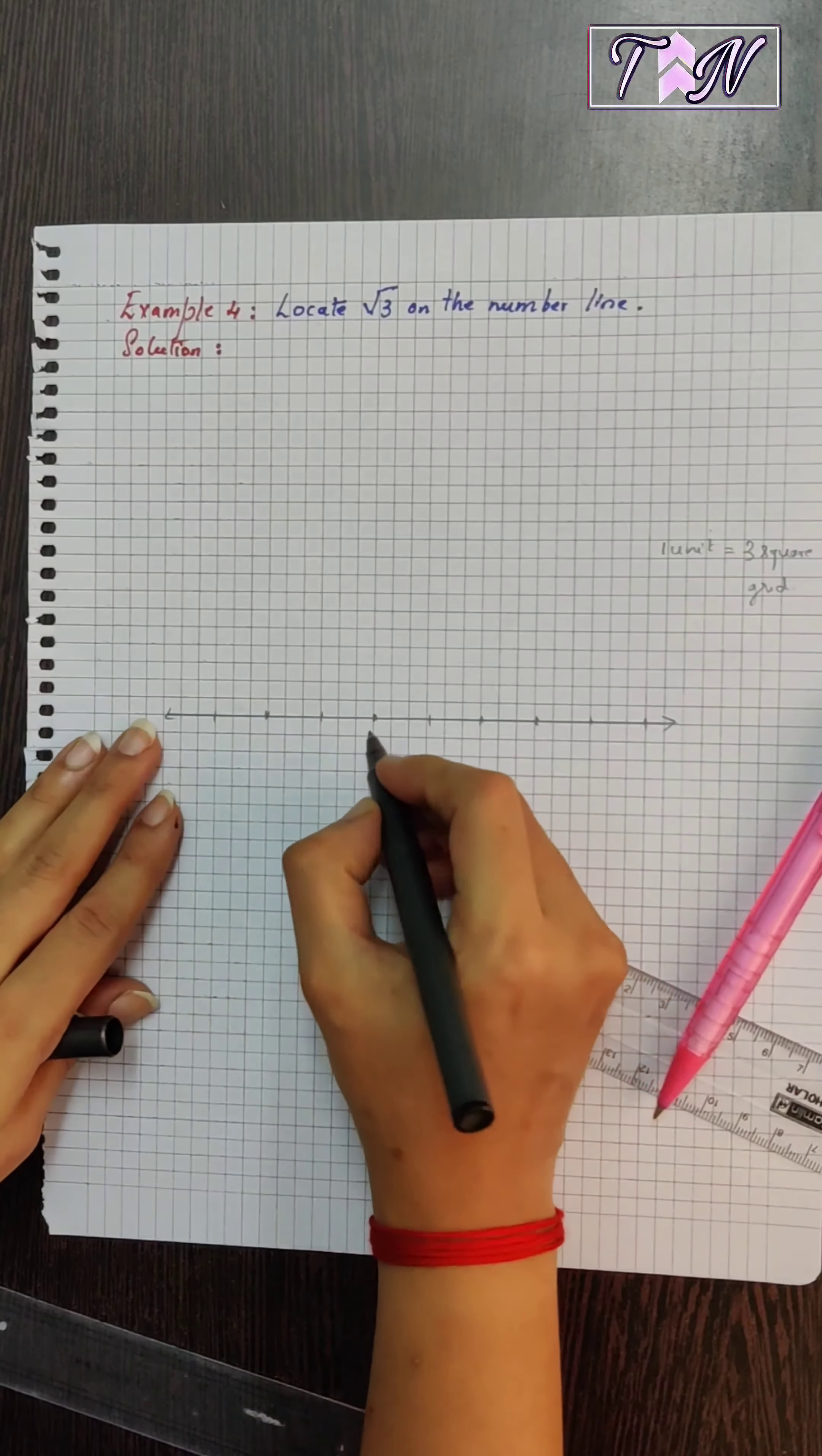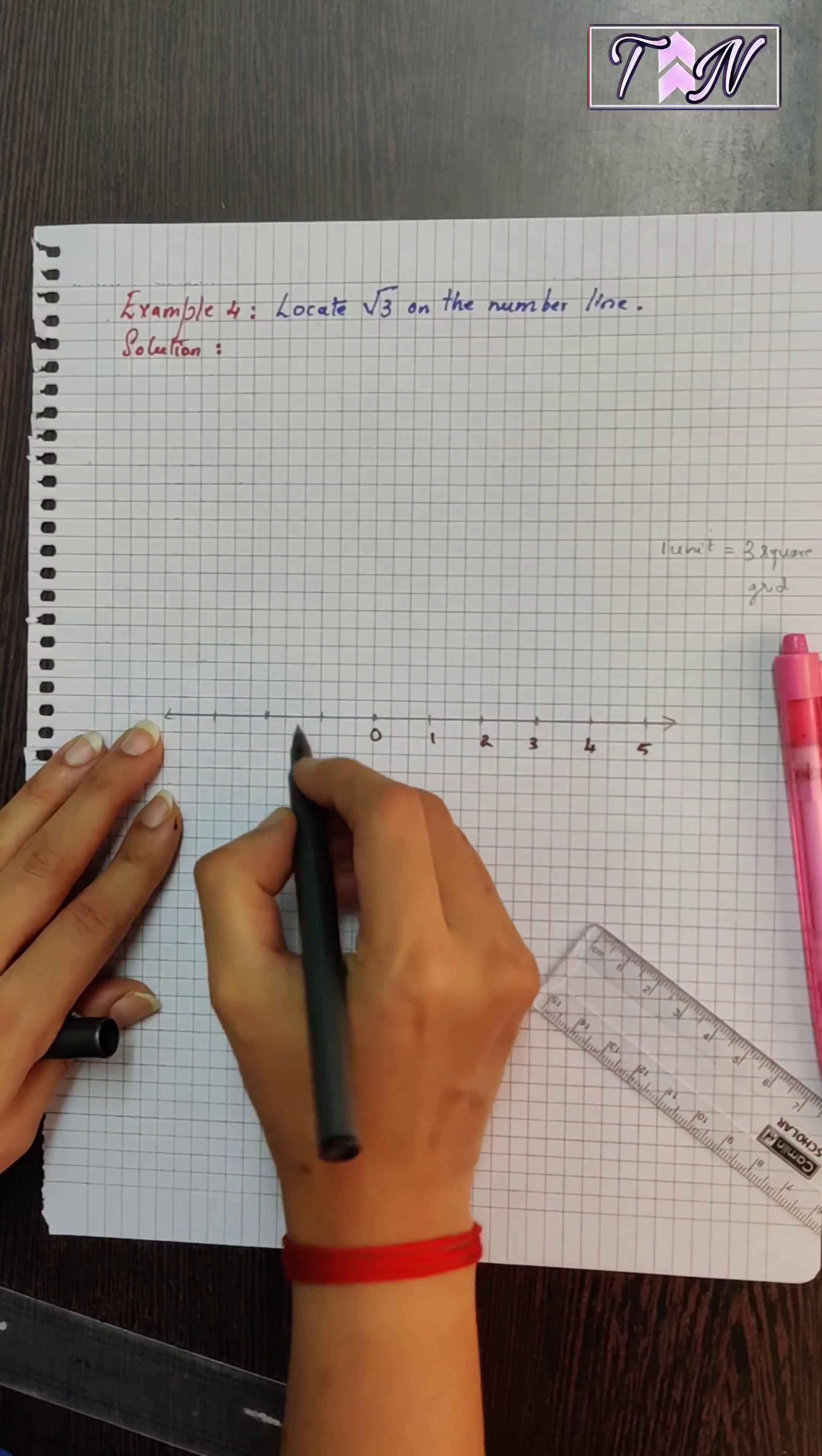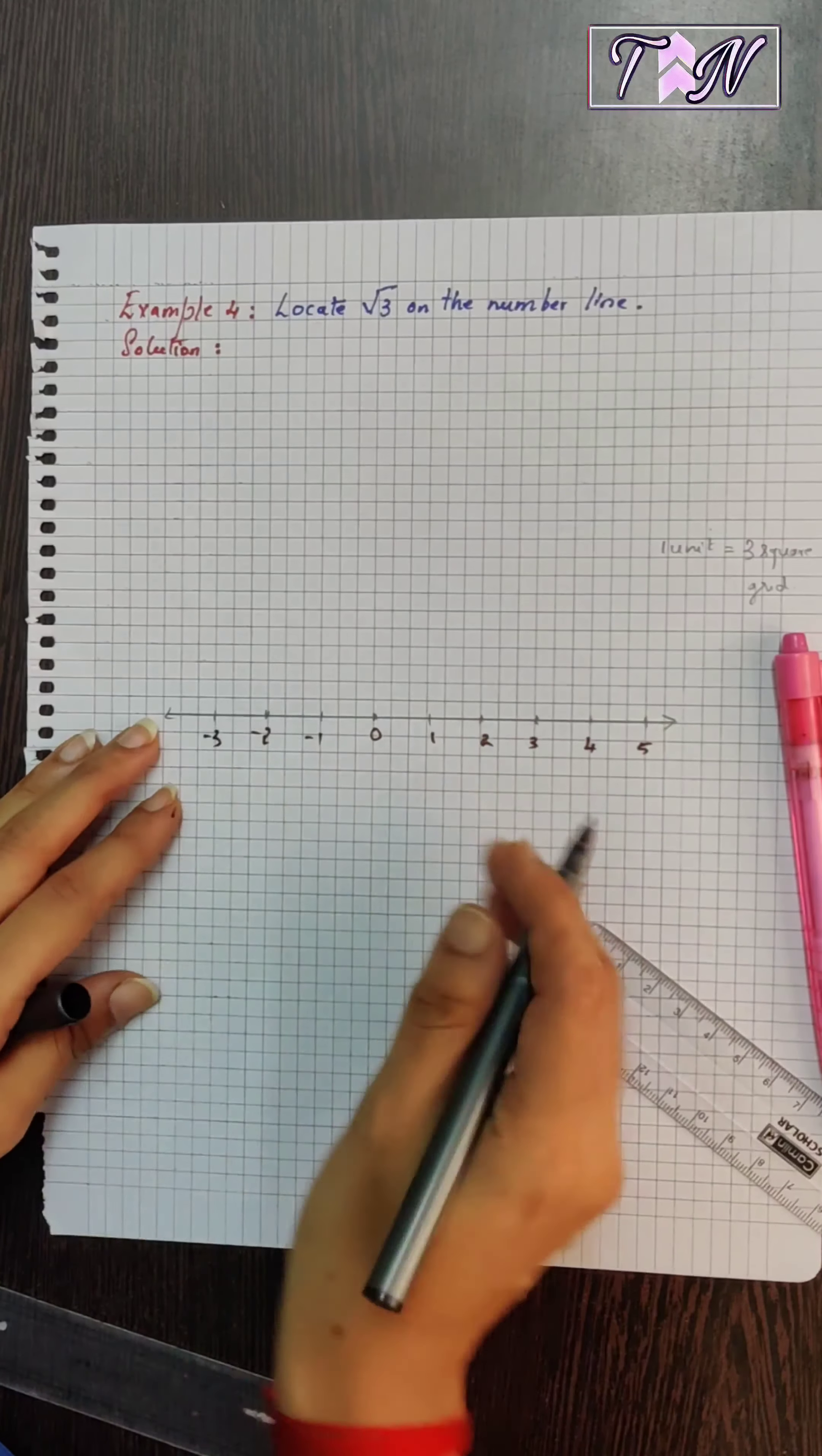So, this is my 0, 1, 2, 3, 4, 5, positive side, minus 1, minus 2, minus 3, the negative side.